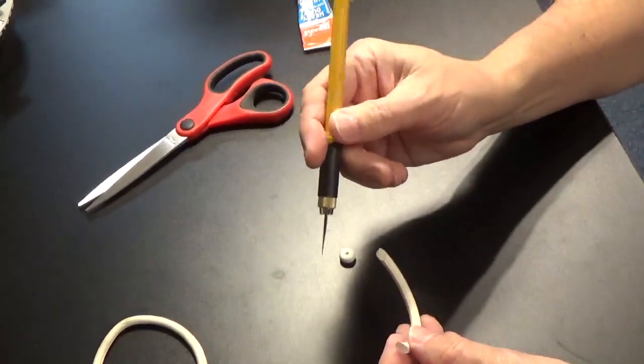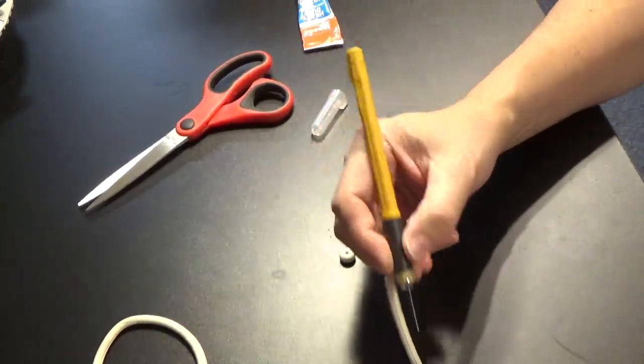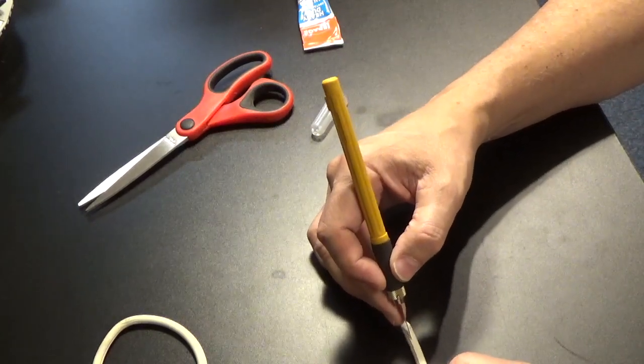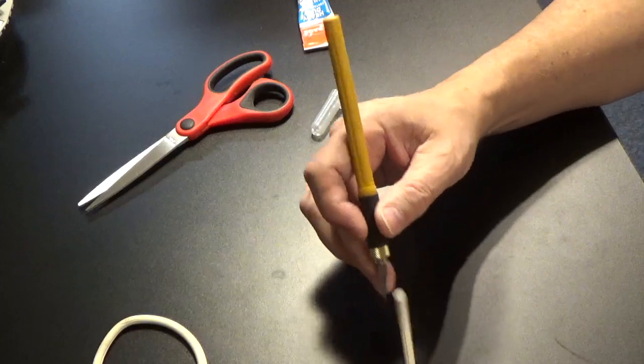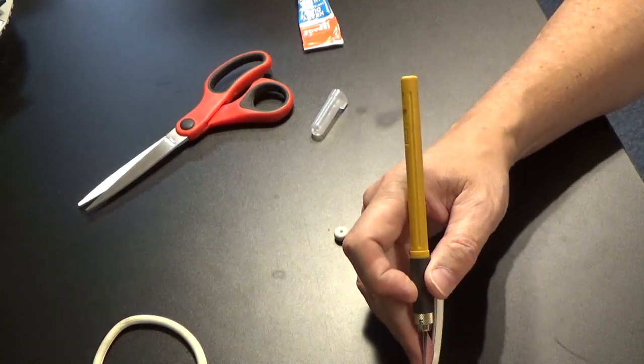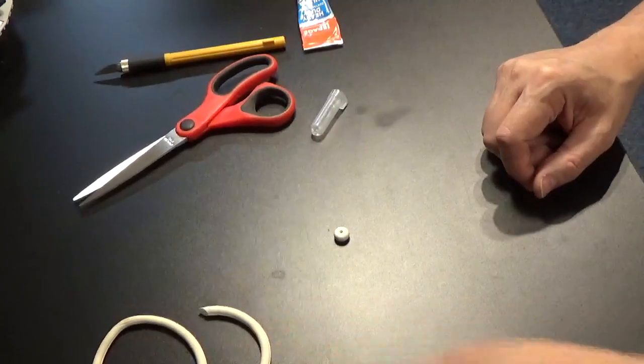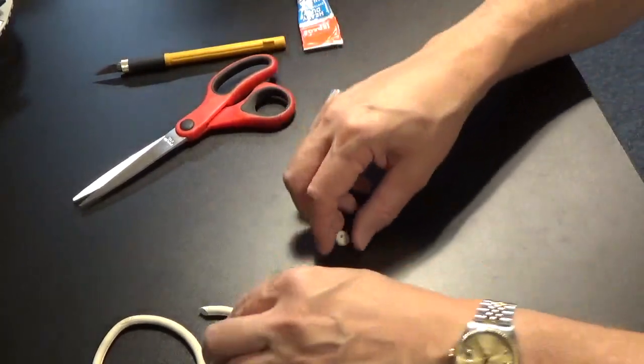Then you take the sharpest knife you've got and you slice lengthwise along the whole thing as far through as you can, about three-quarters of the way through. And you glue it on.